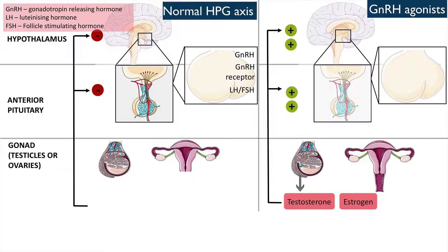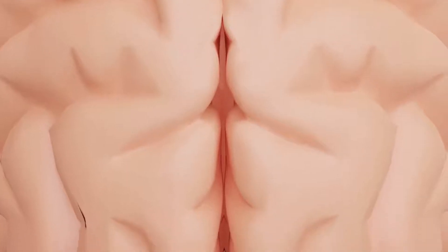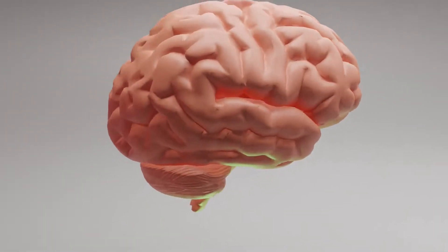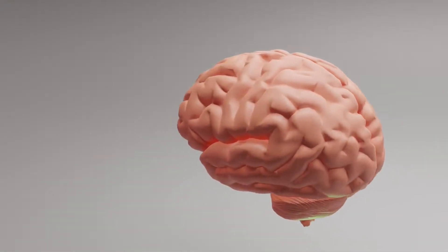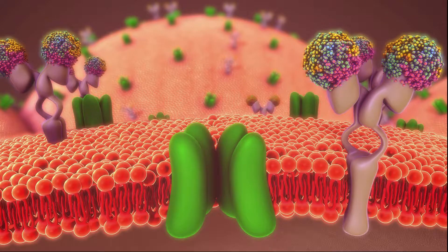After continuous stimulation of the GnRH receptor, they eventually become desensitized to the GnRH hormone. Over time, after desensitization and receptor downregulation, the pituitary shuts down its production of LH and FSH. It is no longer responsive, and this leads to a reduction in the production of sex hormones, leading to hypogonadotrophic hypogonadism, or low sex hormones.